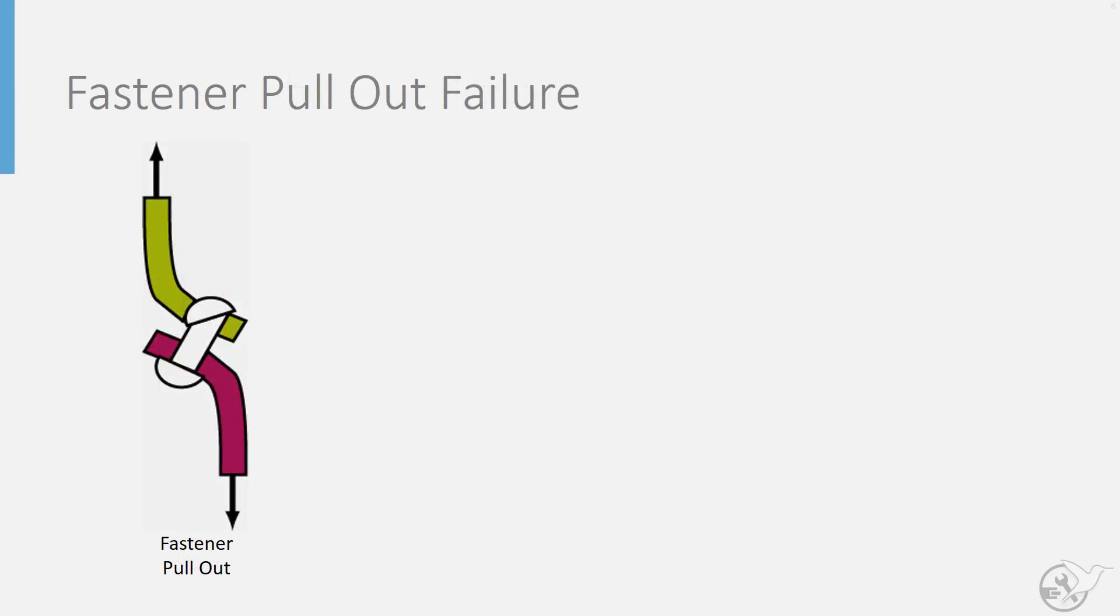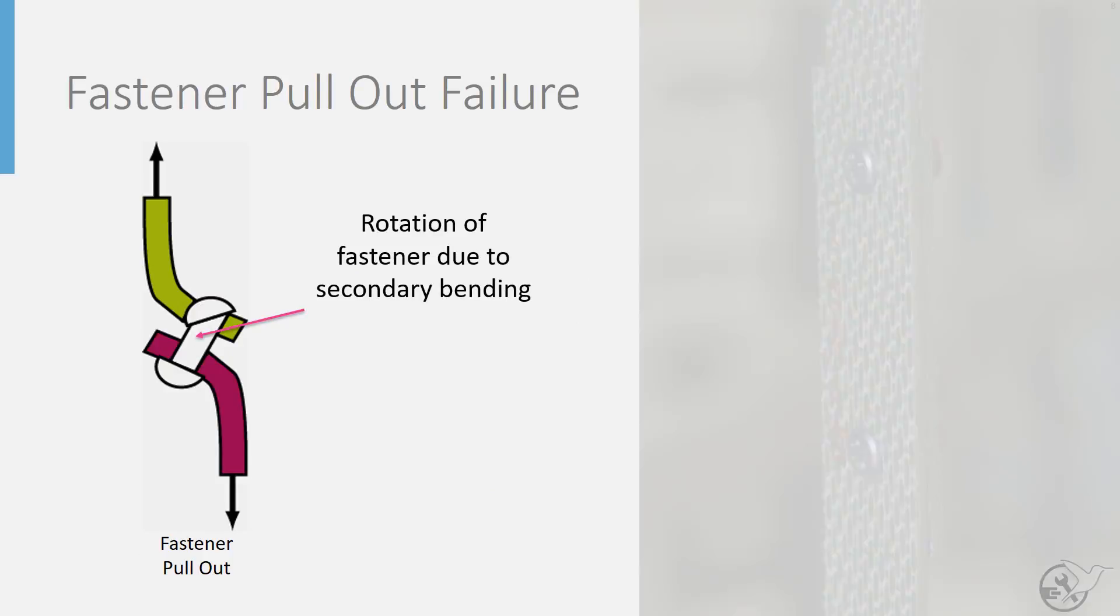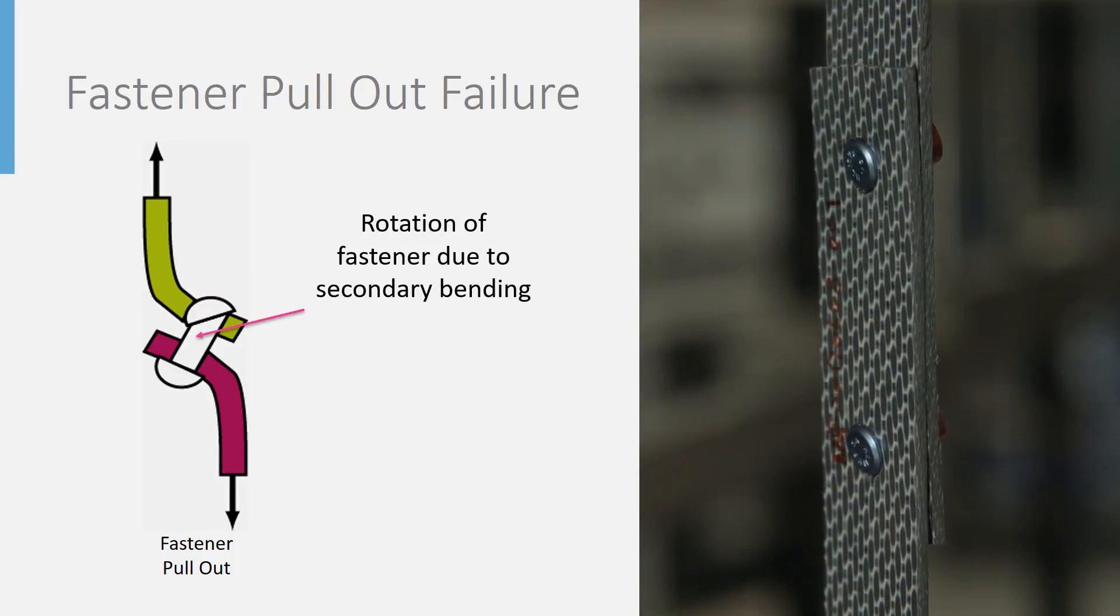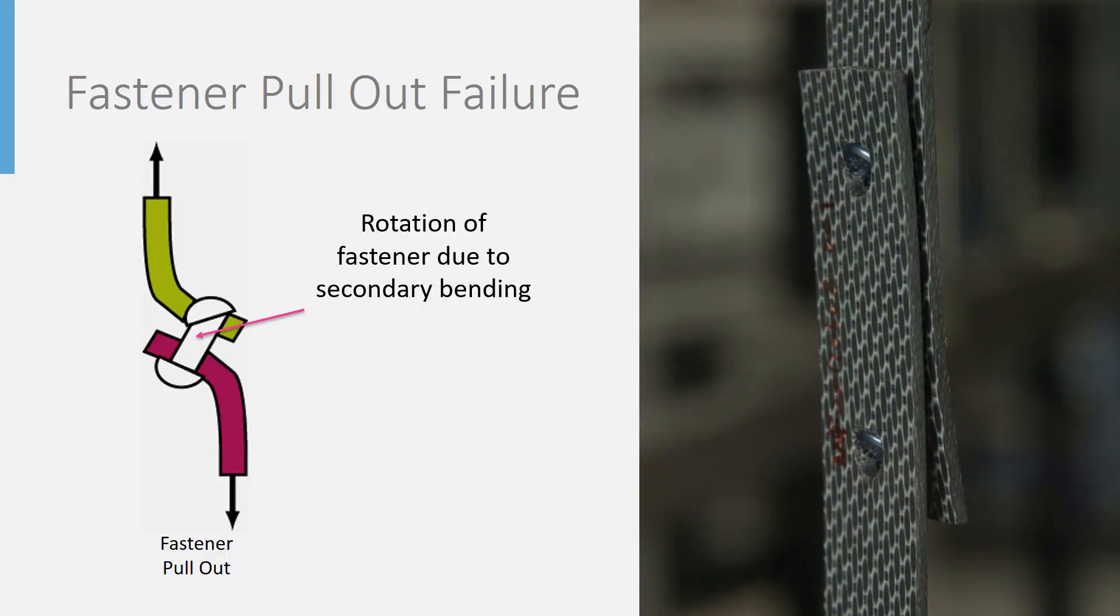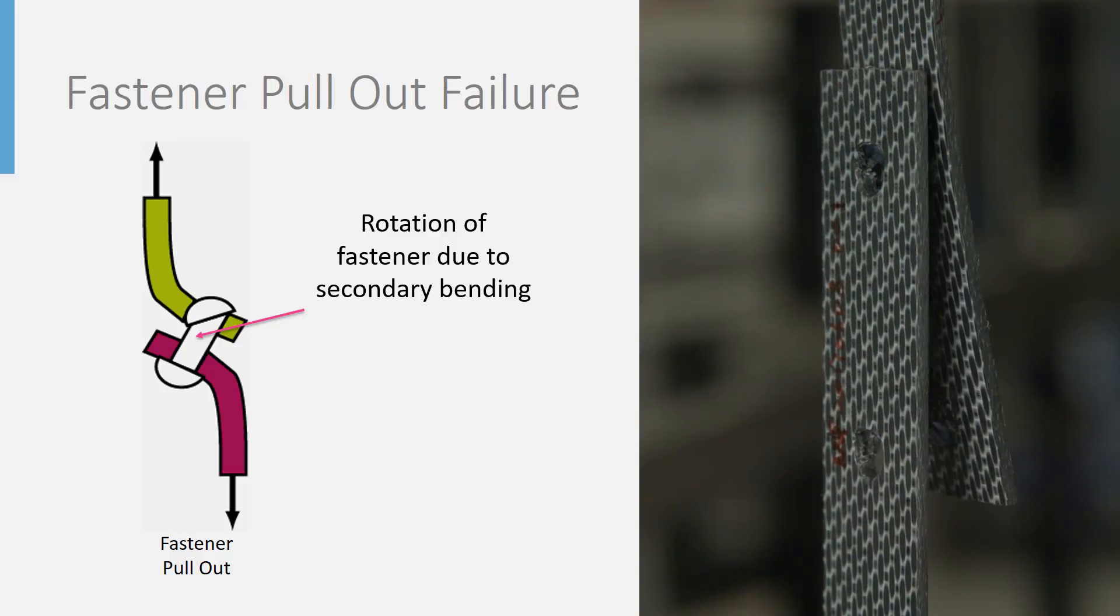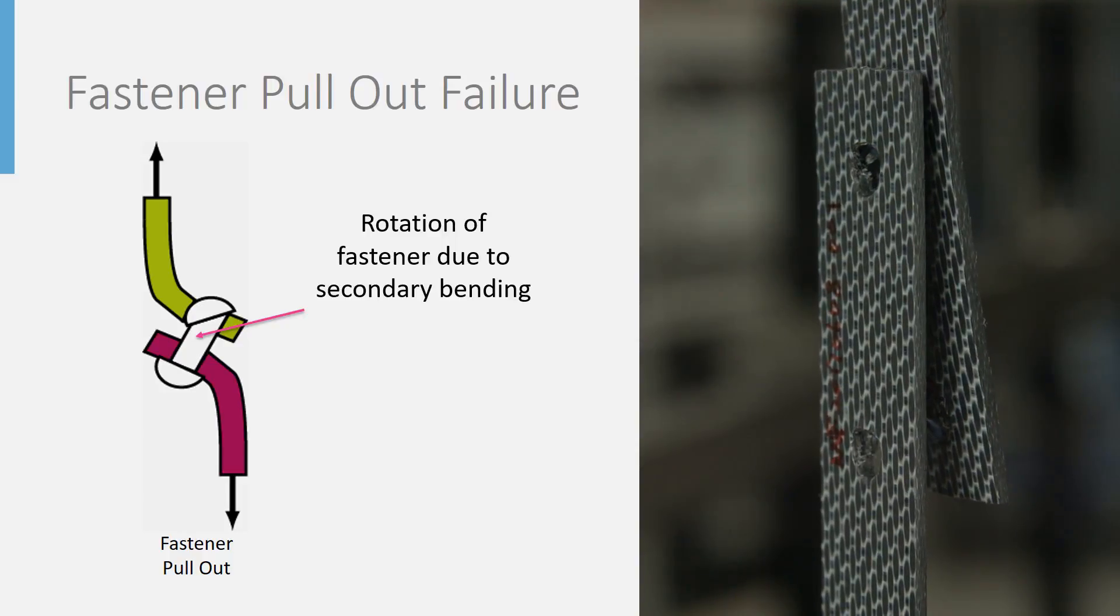Next, we have fastener pull-out failure. Due to secondary bending, fasteners within a joint will tend to rotate. If the bending becomes large enough, the resistance to rotation provided by the fastener heads can be overcome, resulting in the fastener over-rotating and being pulled through the parts it is joining.